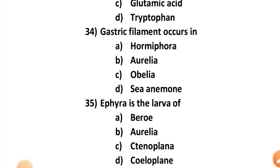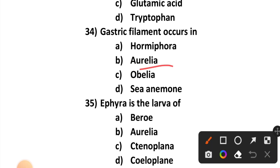Question number thirty-four: Gastric filament occurs in — Hormiphora, Aurelia, Obelia, or sea anemone? Gastric filament is the characteristic feature of Aurelia.